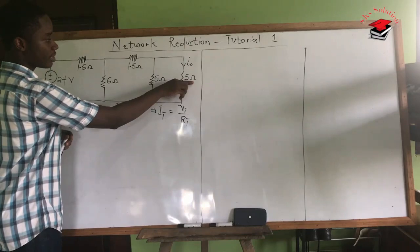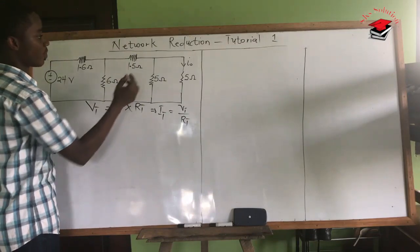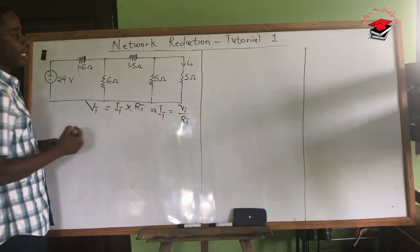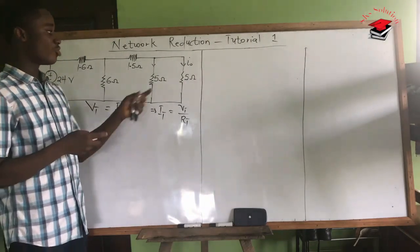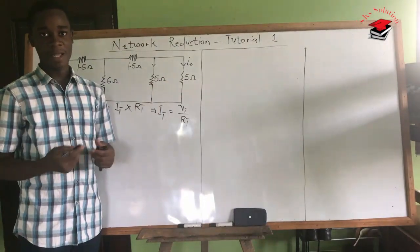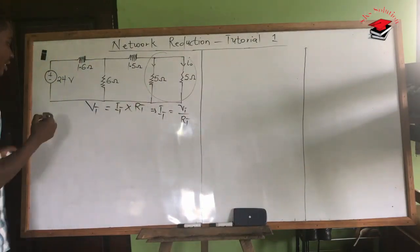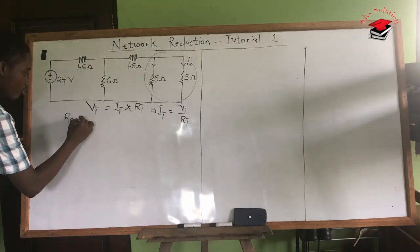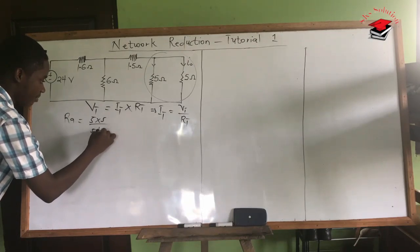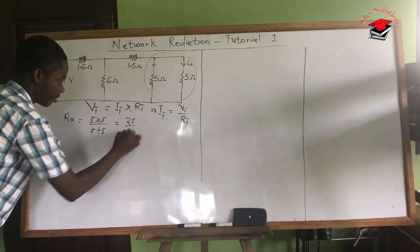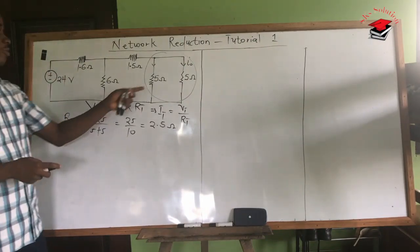We can see that this 5 ohms is connected in parallel to that 5 ohms. They are in parallel because whenever current gets to this junction, the current will have to split between this branch and that branch. Since the current is splitting between these two resistors, they are connected in parallel. So let's find the equivalent resistance RA: RA = (5 × 5) / (5 + 5).